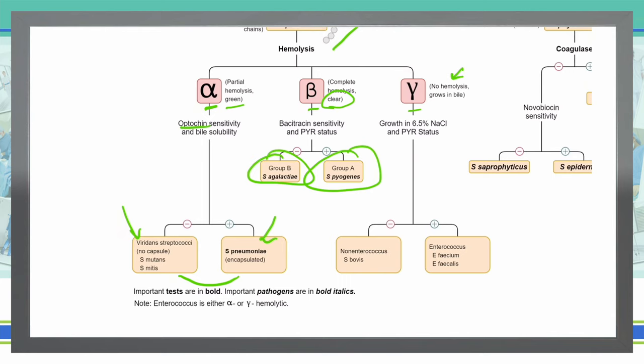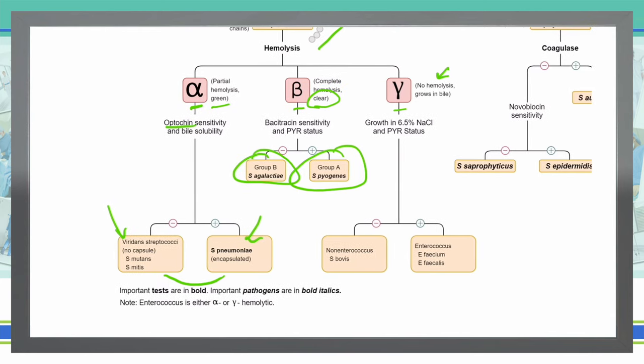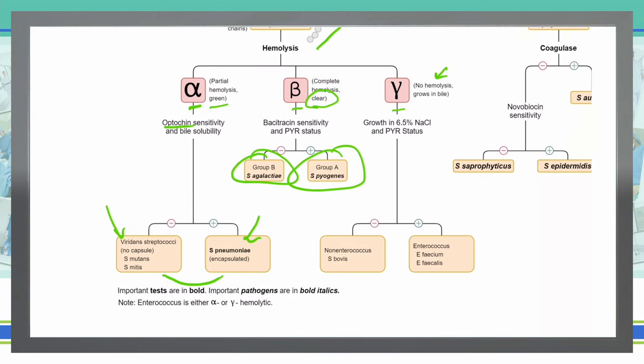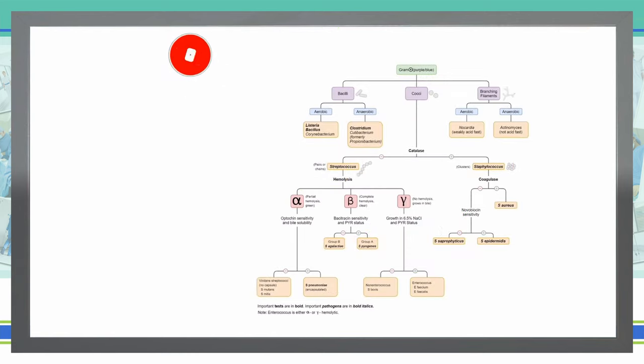And finally, our gamma hemolysis: if it grows under 6.5% sodium chloride solution, then we're dealing with Enterococcus, specifically Enterococcus faecium and faecalis. Or if it does not grow under that 6.5% sodium chloride and PYR status, then we are dealing with a non-Enterococcus such as Strep bovis. Come back soon for some more discussions and breaking down each one of these organisms in more detail.